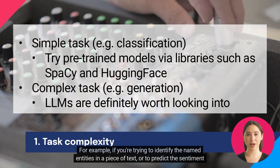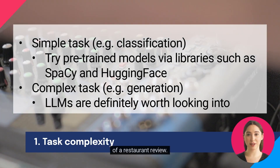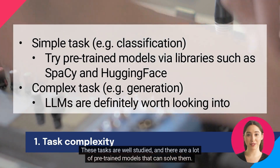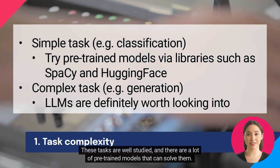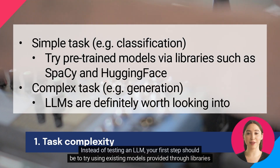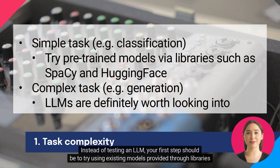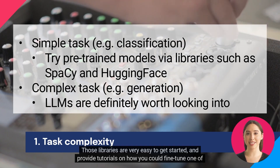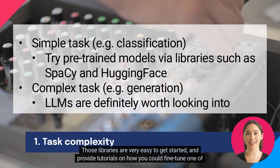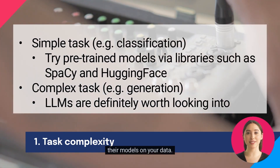For example, if you're trying to identify the named entities in a piece of text, or to predict the sentiment of a restaurant review — these tasks are well-studied, and there are a lot of pre-trained models that can solve them. Instead of testing an LLM, your first step should be to try using existing models provided through libraries such as Spacy and HuggingFace. Those libraries are very easy to get started with and provide tutorials on how you could fine-tune one of their models on your data.